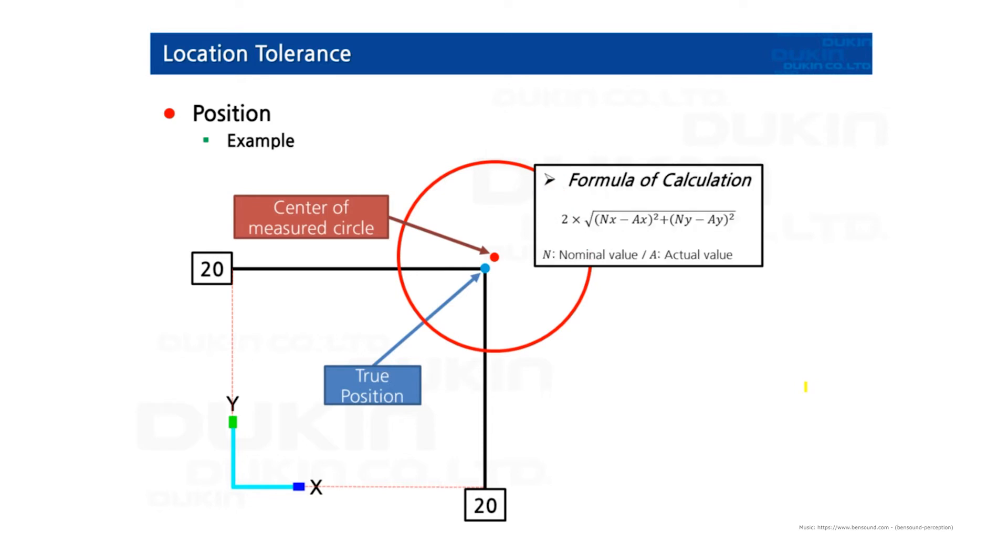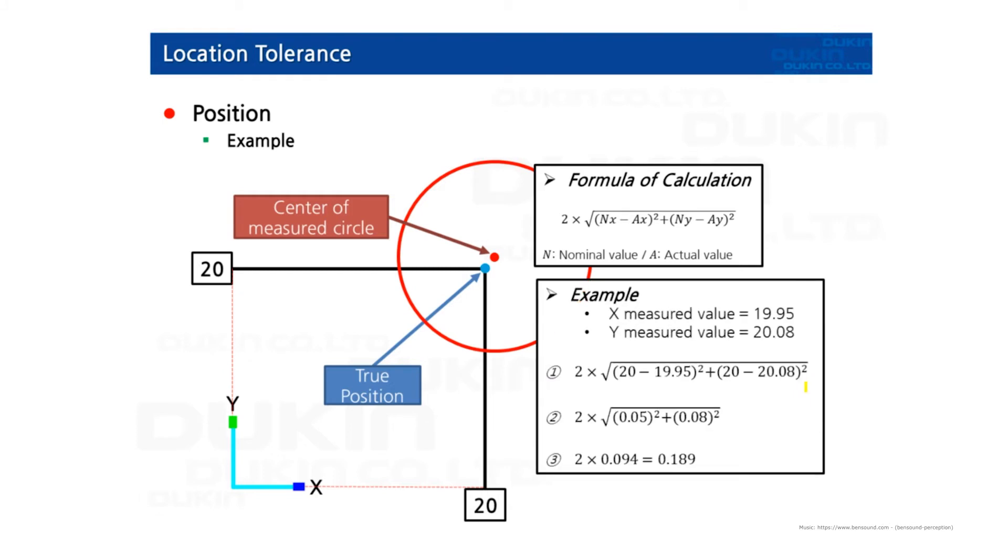And here's the formula of calculation for the position tolerance. And there's an example as well. And if the X value is 19.95 and Y value is 20.08, then the calculated position value would be that much.